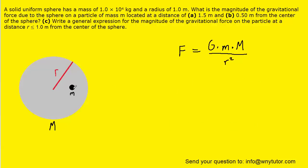Now on to part B of the question. In this case, we're taking that particle whose mass is lowercase m and moving it to 0.5 meters from the center of the large gray sphere. The fact that it's at 0.5 meters from the center means it's actually inside the solid uniform sphere. When this little particle is inside the larger sphere, we can't use the entire mass of the gray sphere in doing the calculation.